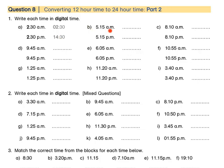For B, 5:15 AM — this is in the morning, before the sun has risen. Because this is morning time, it stays the same. We simply write it as 05:15 — hours first, then minutes.